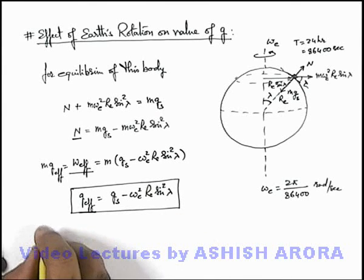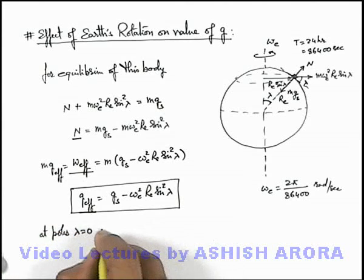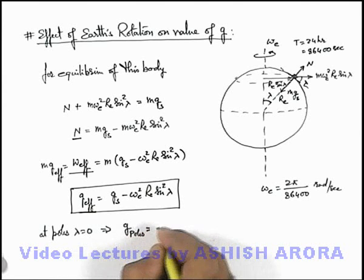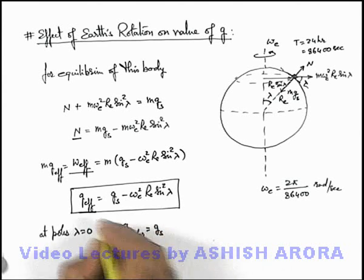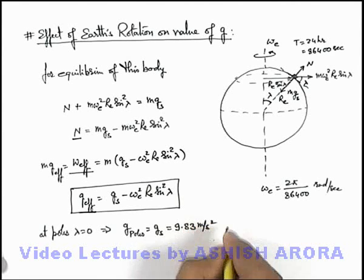Here we can also see at poles the value of λ is zero. This implies we can write gravity at poles is equal to g_s only, and the exact numerical value is 9.83 meter per second square.